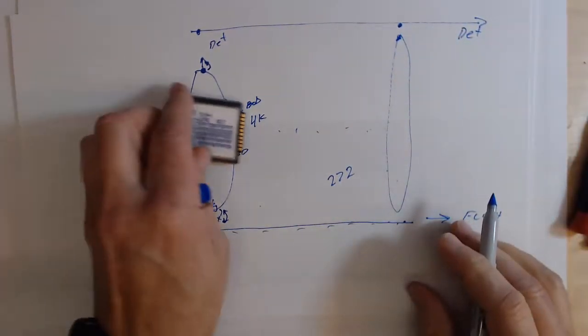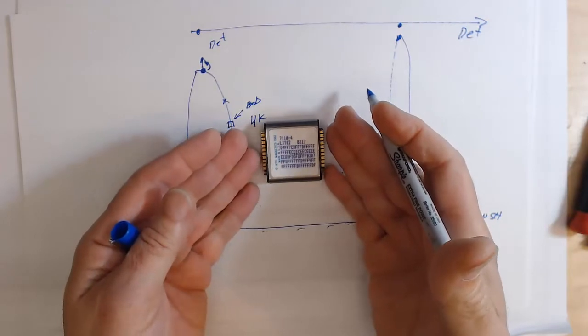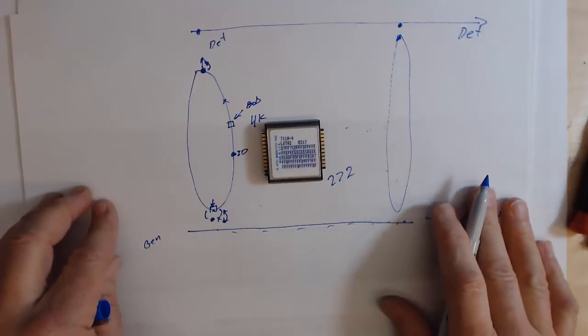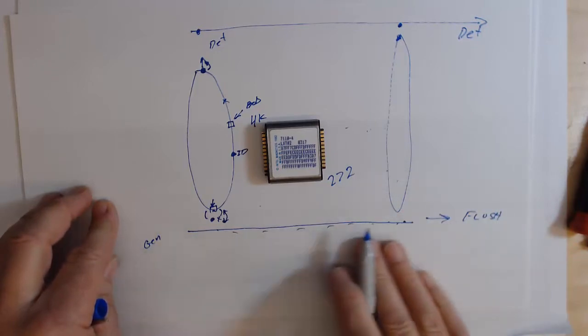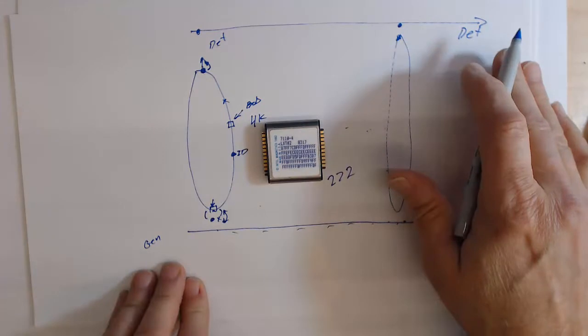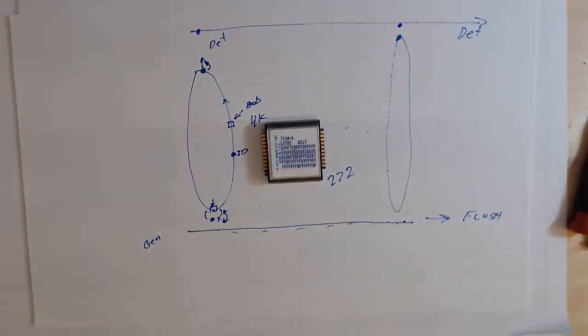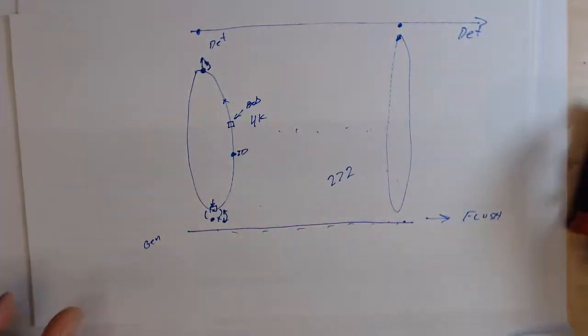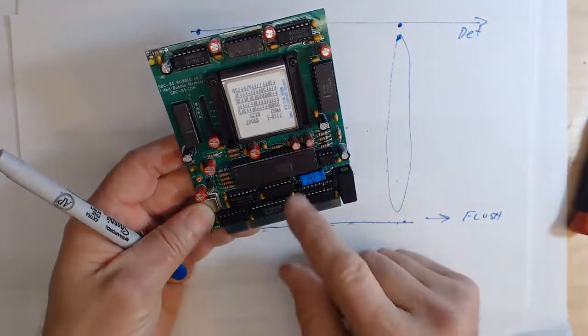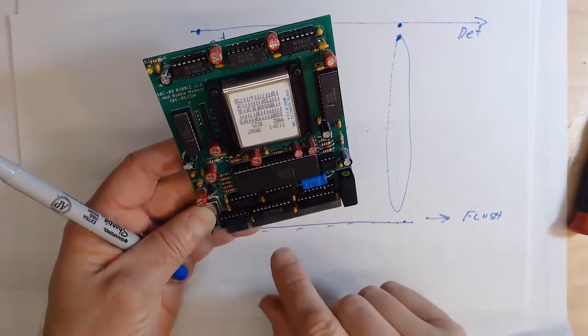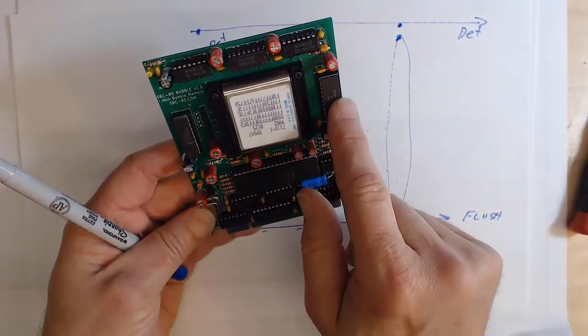So that's really all that's in this 7110: these 272 racetracks, the input line, the output line, a detector and a generator and a destroyer. In order to get this guy working, that's where we have to have these support chips. So this is where the main bubbles live, this is the two-dimensional plane of bubbles. I have these six support chips around here.